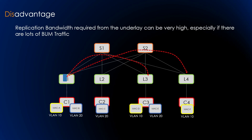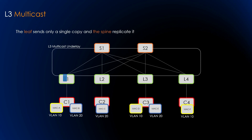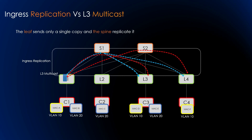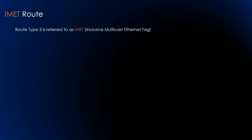The second approach to handle BUM traffic is layer 3 multicast support in the underlay network. Using multicast, the ingress leaf does not have to send a separate copy to each egress leaf. Instead, the leaf sends a single copy to the spine, and the spine replicates it to multiple leaves. The key difference: in ingress replication the leaf replicates the packet, while in the multicast approach the spine replicates it. The main advantage is the ability to handle large volumes of BUM traffic or well-known multicast packets efficiently. The underlay must be configured with multicast routing support, and the flooding list is built using the IMET route.